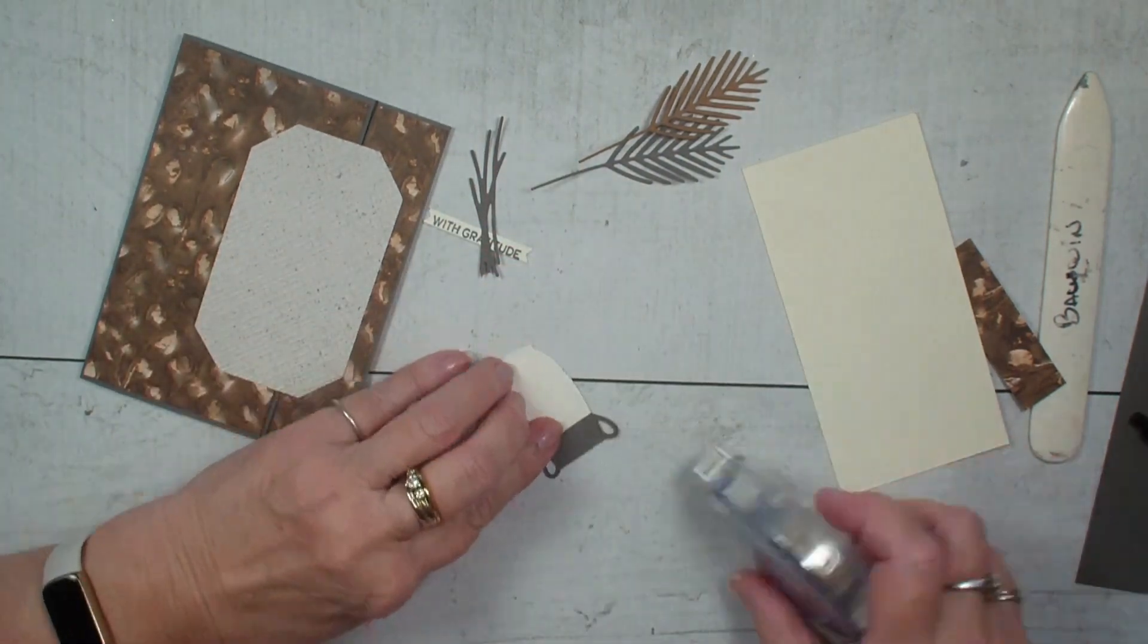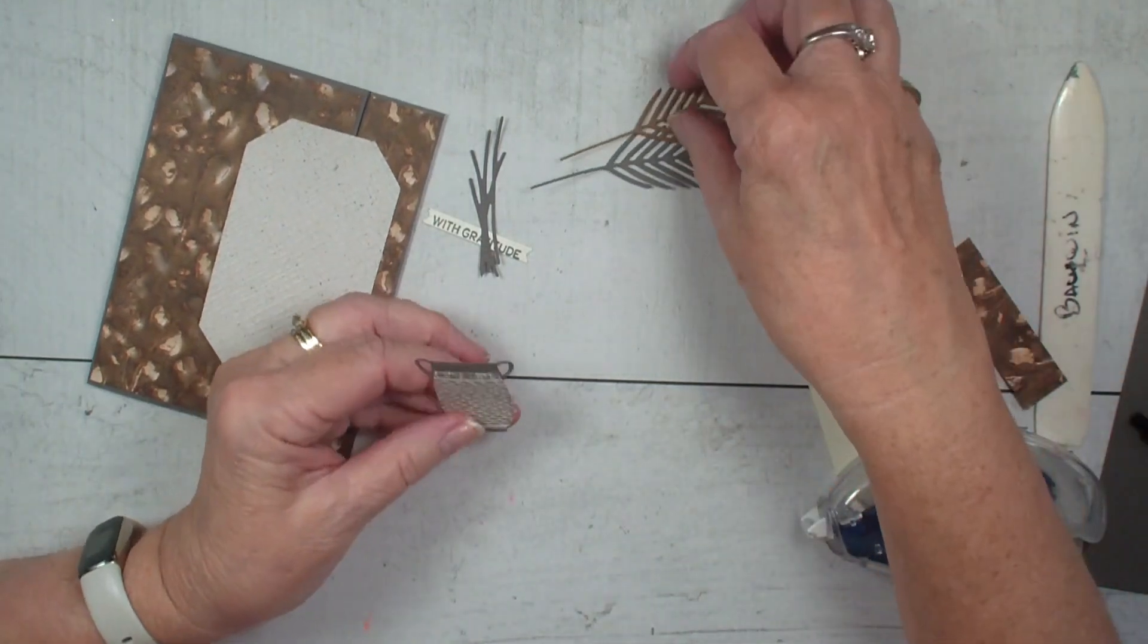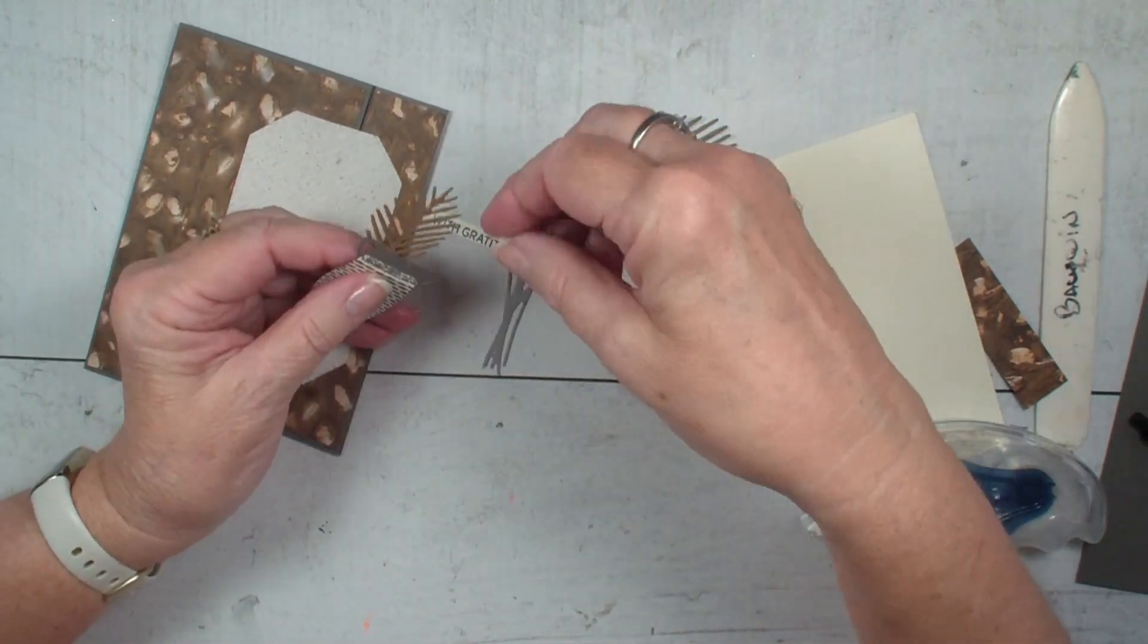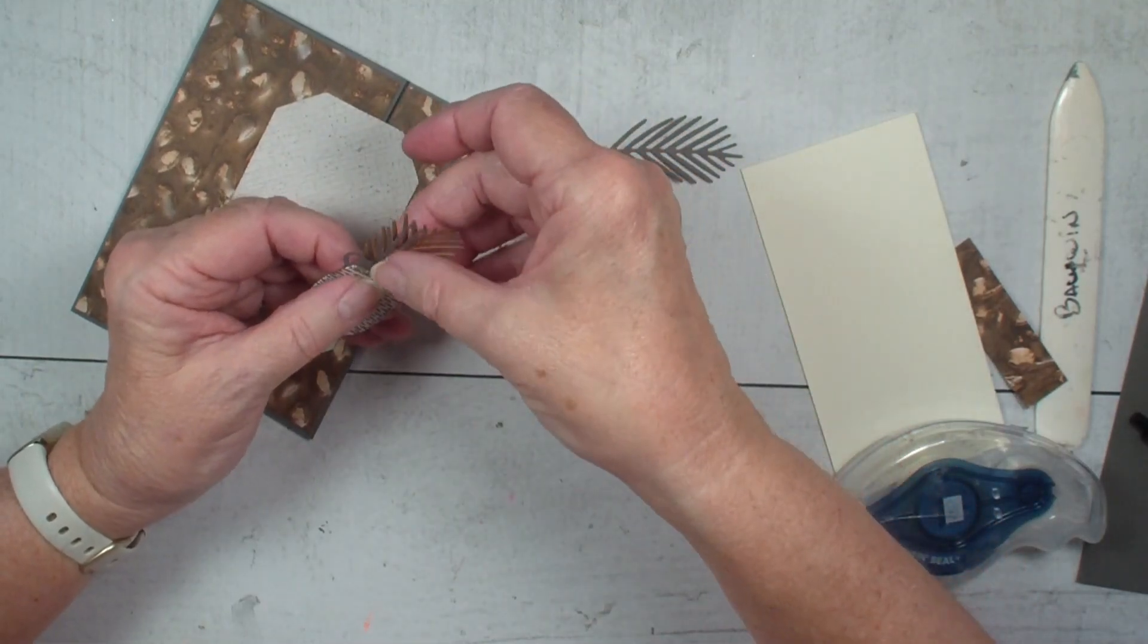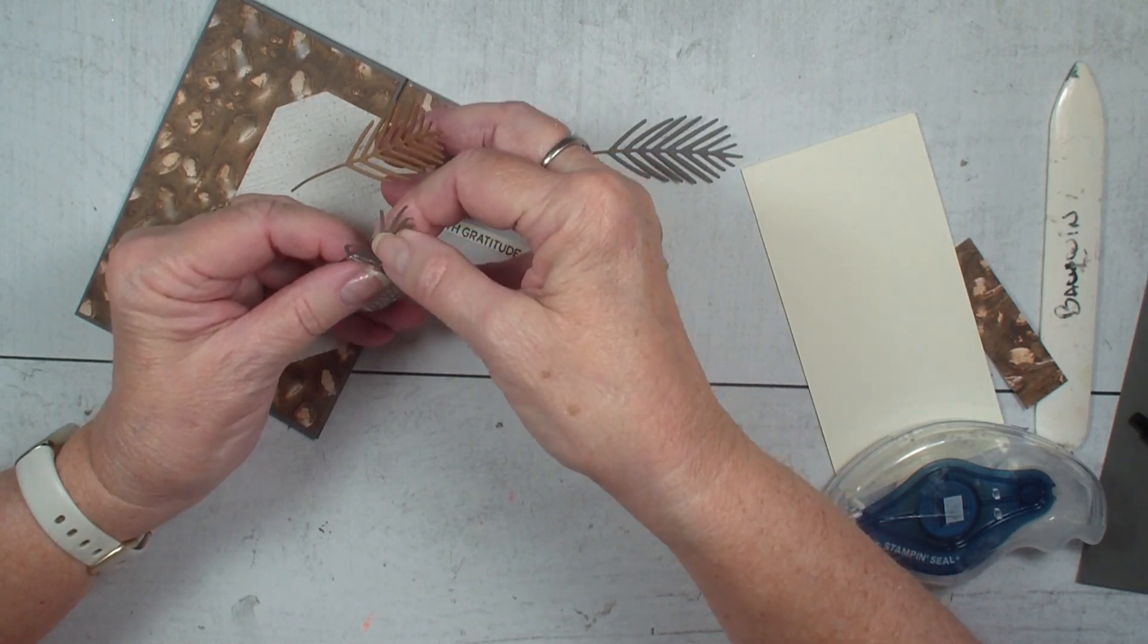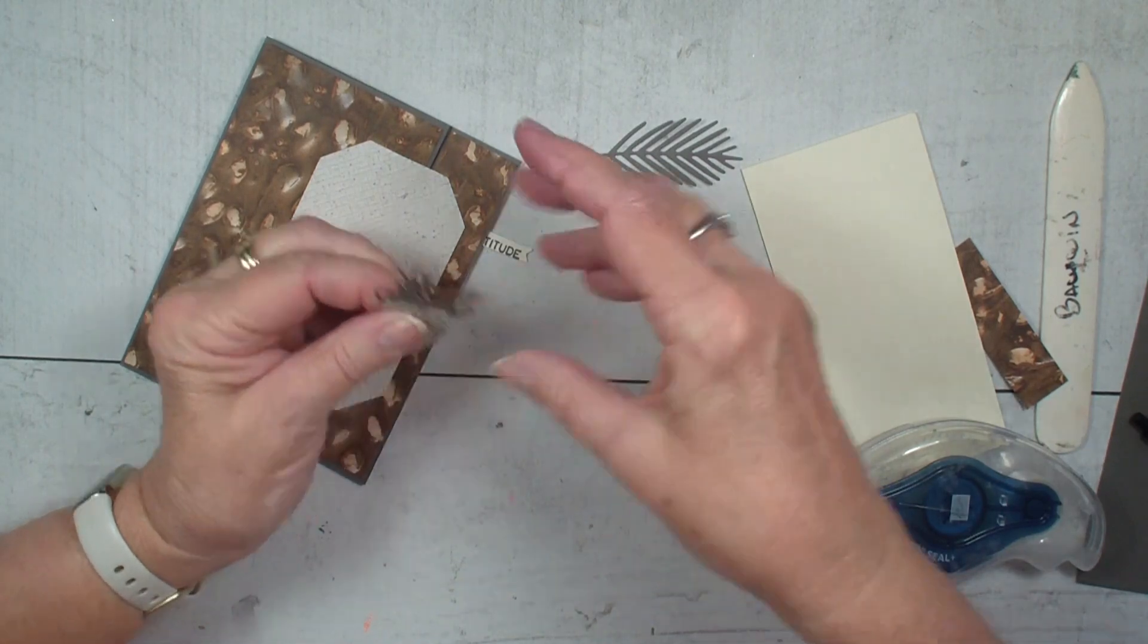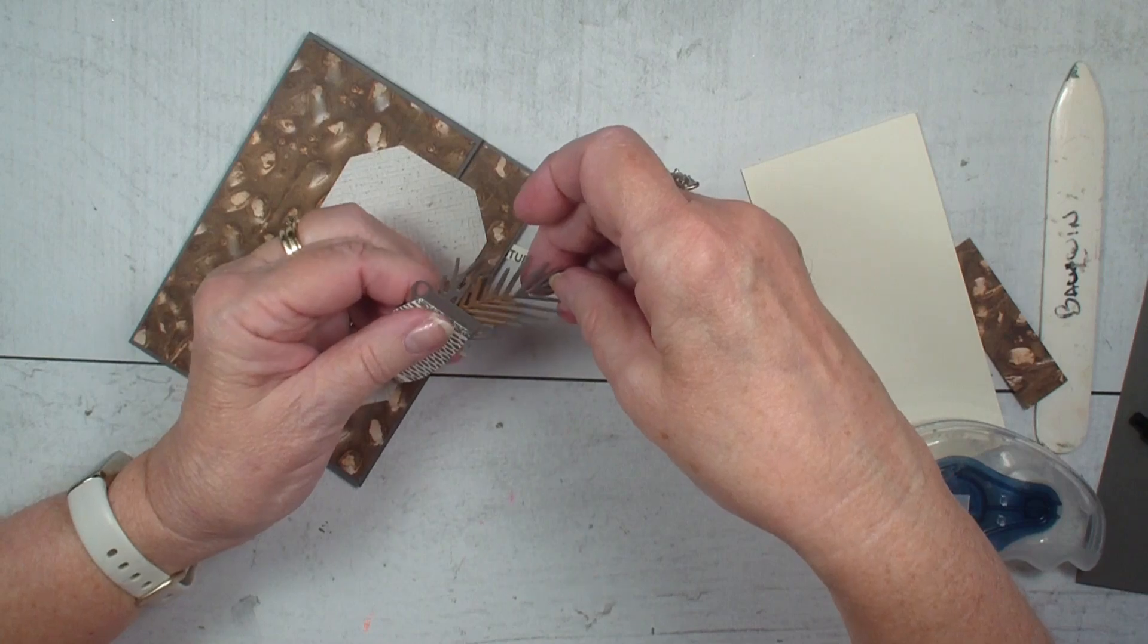I'm then going to add some adhesive and bring in my ferns that I've already die cut and also that little sprig. I guess that's what it's called. I'm going to add that to my vase and we'll put that bigger one off to the back like so.